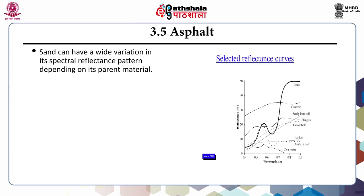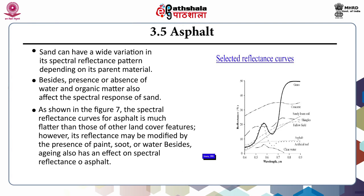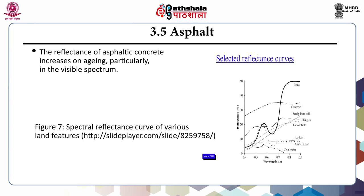Now comes asphalt. Sand can have a wide variation in its spectral reflectance pattern depending on its parent material. The presence or absence of water and organic matter also affects the spectral response of sand. As shown in figure 7, the spectral reflectance curve for asphalt is much flatter than those of other land cover features. However, its reflectance may be modified by the presence of paint, soot or water; besides, aging also has an effect on spectral reflectance of asphalt. The reflectance of asphaltic concrete increases on aging, particularly in the visible spectrum.